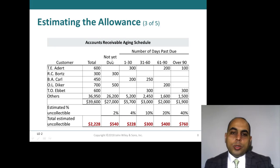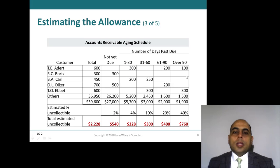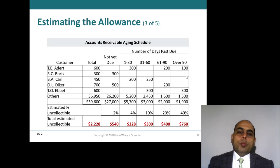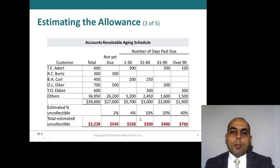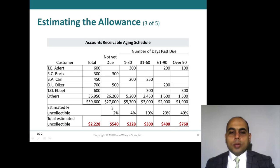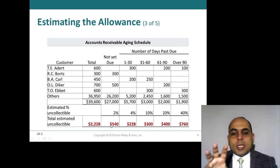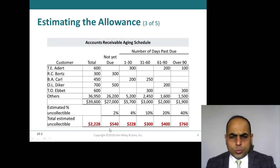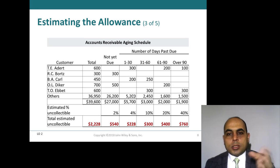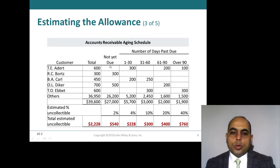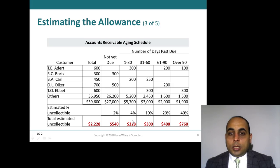In the aging schedule, you have columns for: not yet due, 1–30 days past due, 30–60 days, 61–90 days, and over 90 days. You classify each customer's amount by number of days past due. For example, the not-yet-due amount totals $27,000, doubted at 2%, giving an expected uncollectable amount of $540. For 1–30 days past due, the amount is $5,700 at 4%, giving $228.